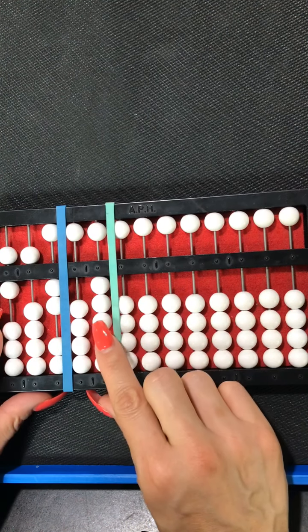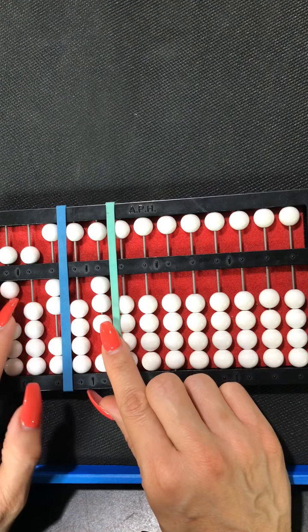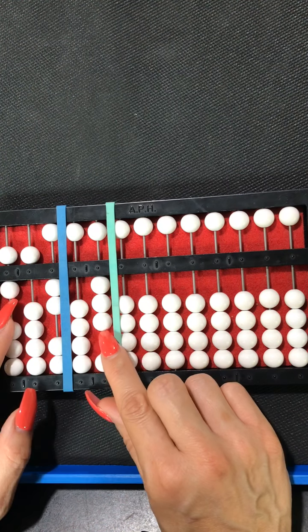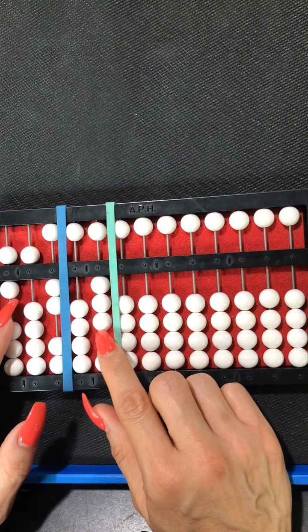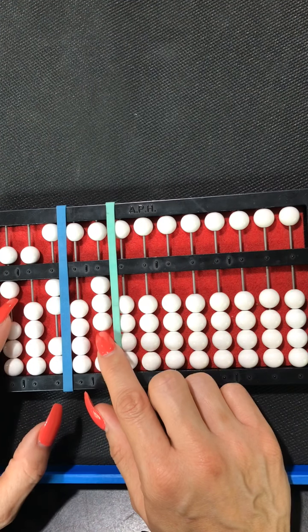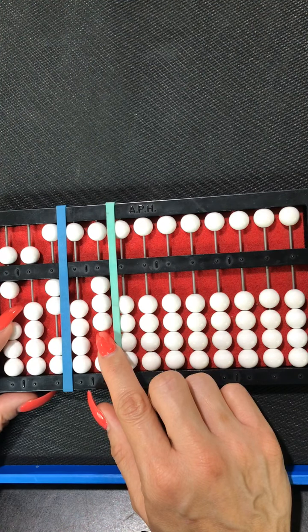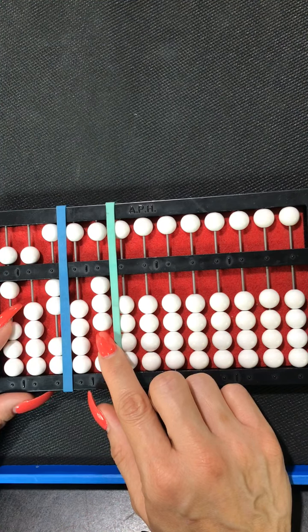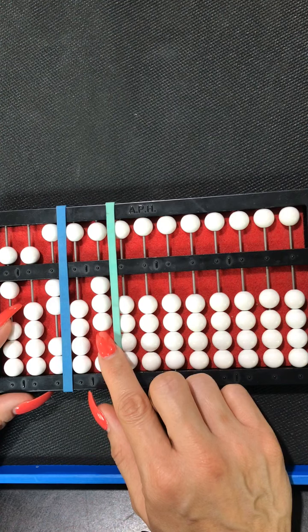So now we say what is 3 times 6 or we can say what is 3 times 600? Do you remember 3 times 6? It is 18.